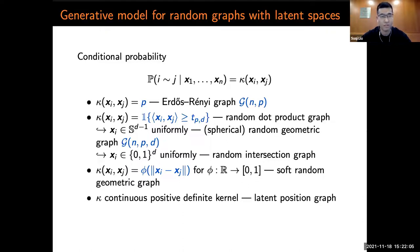In the statistical community, people also consider kappa to be a continuous positive definite kernel, and they call it a latent position graph. And also, the model generalizes the stochastic block model and many variants. All the models listed above, except for the Erdős-Rényi graph, depend on the latent positions in some way.